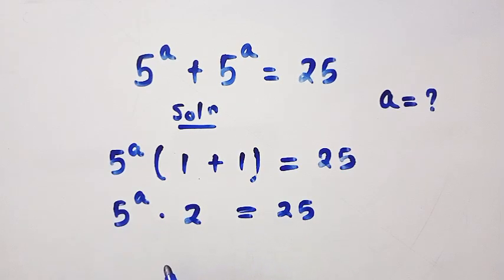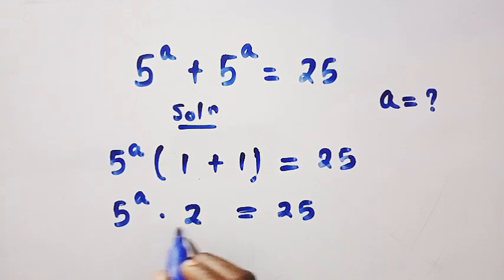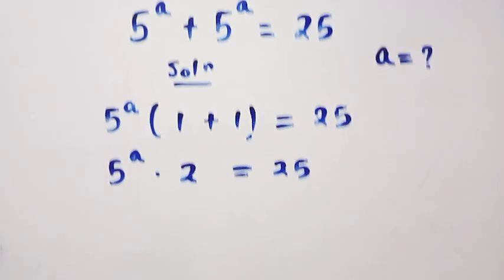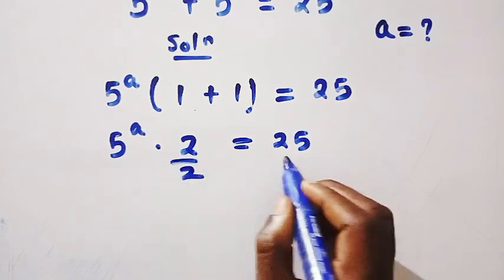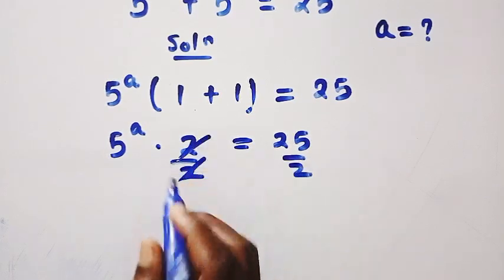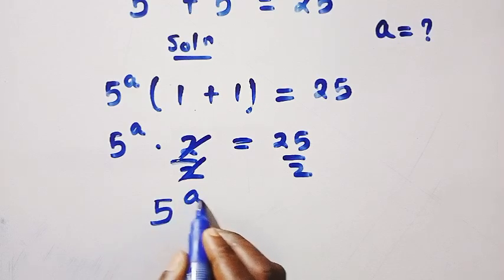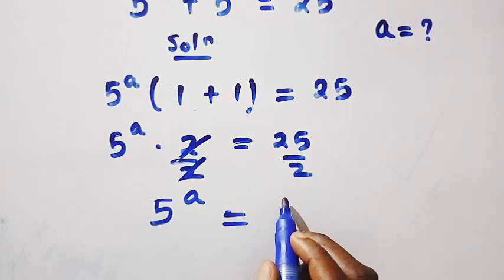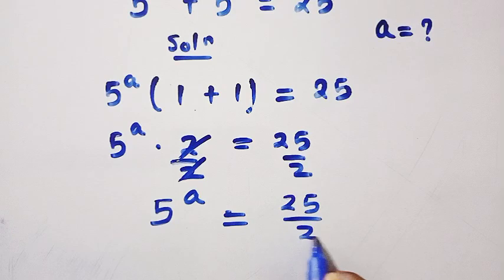So I'm going to solve this problem step by step, and I'll put a check after the final solution. So let's divide by 2. By dividing, 2 cancels 2, and we have 5 power a equals 25 divided by 2.